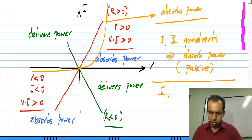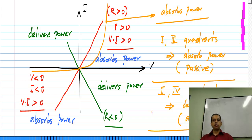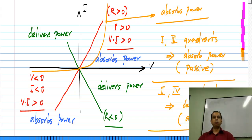If you are in the second or fourth quadrants, the element delivers power — it is active if operating in the second or fourth quadrants. Later we will see elements such as voltage source or current source which can either deliver power or absorb power. So from this part a couple of things should be clear: first, a resistor always absorbs power and consequently always absorbs energy — it is a passive element. We also discussed the I-V characteristics and the implications on passivity. If you have I-V characteristics in the first or third quadrants, then the element is passive. Later we will see elements which can be either passive or active, depending on the quadrant in which they are operating.